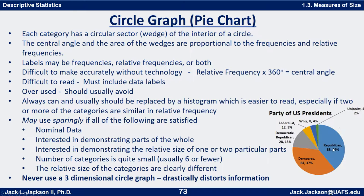The labels on here could either be frequencies — which is what we have here: 88 Republicans, 84 Democrats — or relative frequencies: 39 percent Republicans, 37 percent Democrats. Usually we're more likely to use percentages or relative frequencies with a circle graph, because a pie chart is mainly used to emphasize what portion of a whole we have, which is basically what percentages represent.